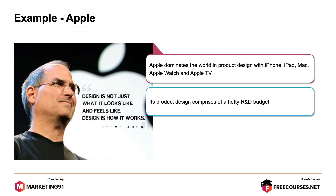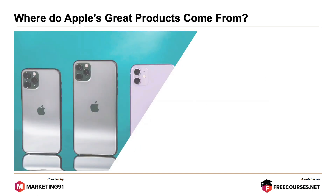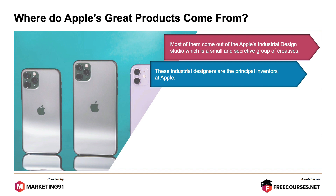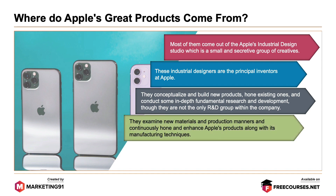Apple's product design comprises a hefty R&D budget. For example, Apple spent $16.2 billion just on development in 2019, increasing by about $2 billion from its 2018 total. Most of Apple's great products come out of its industrial design studio — a small and secretive group of creatives. These industrial designers are the principal inventors of Apple. They conceptualize and build new products, hone existing ones, and conduct in-depth fundamental research and development. They examine new materials and production methods and continuously enhance Apple's products along with manufacturing techniques.